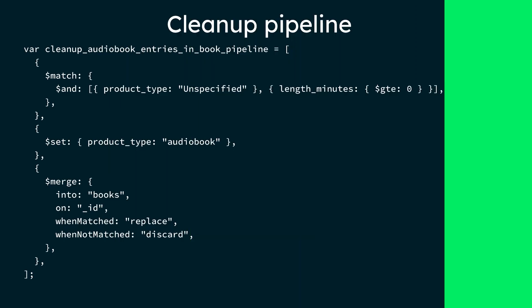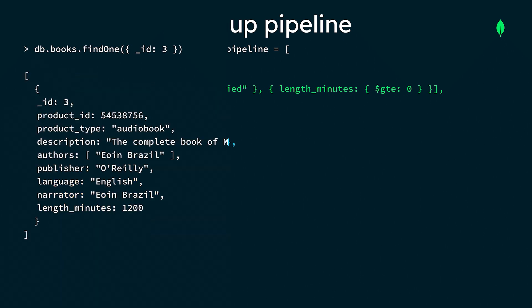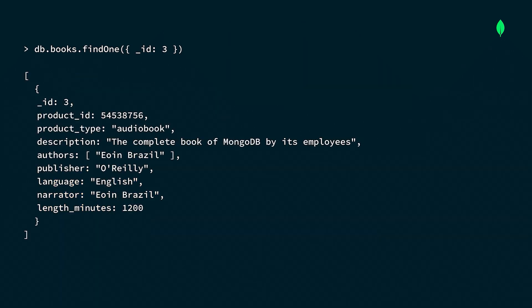Let's start with the audiobook documents. In this pipeline, if there is a product type of unspecified and a length minutes field greater than or equal to zero, then we set the product type to audiobook and save our changes. We would then repeat similar pipelines for the printed book and ebook documents. After running both aggregation pipelines, we can see that the audiobook document has been updated. The desk field was renamed to description, and its product type changed to audiobook from unspecified.